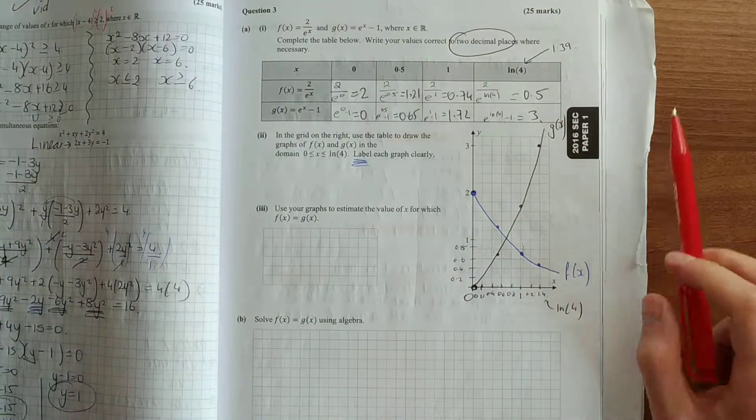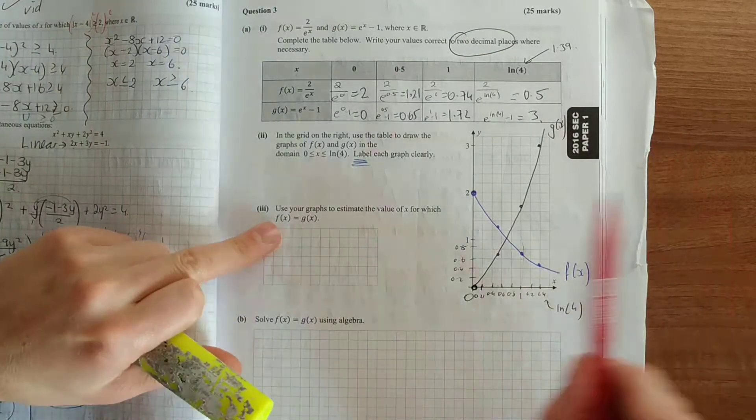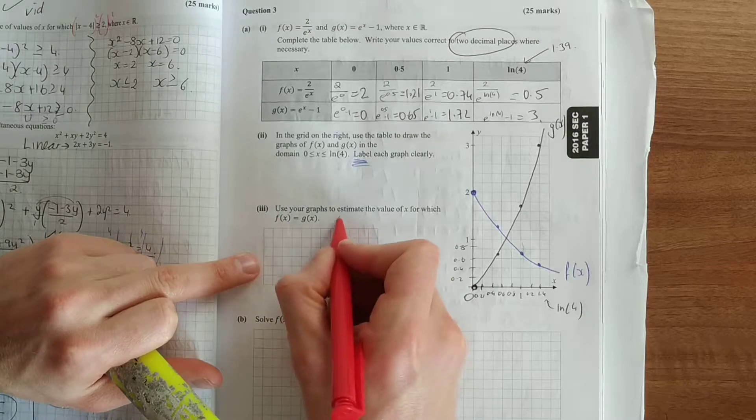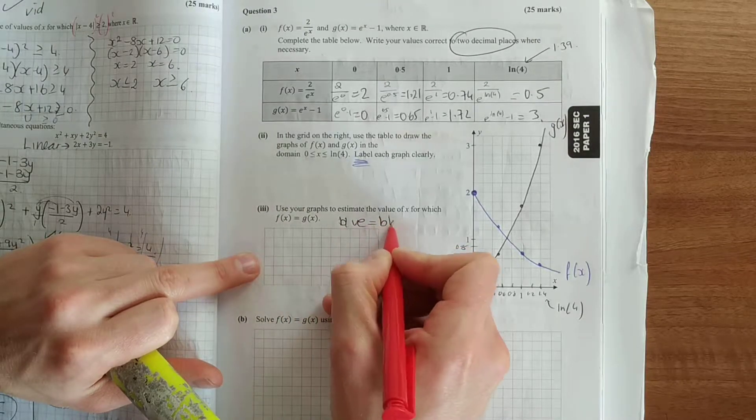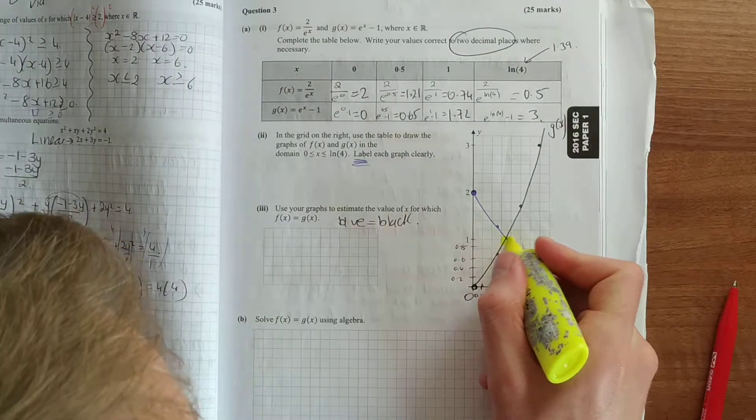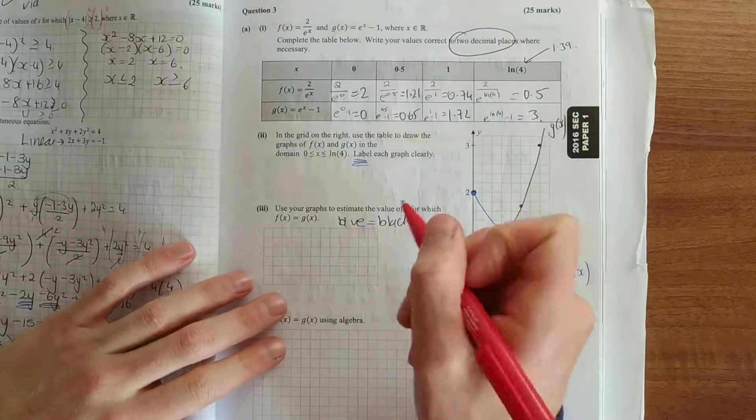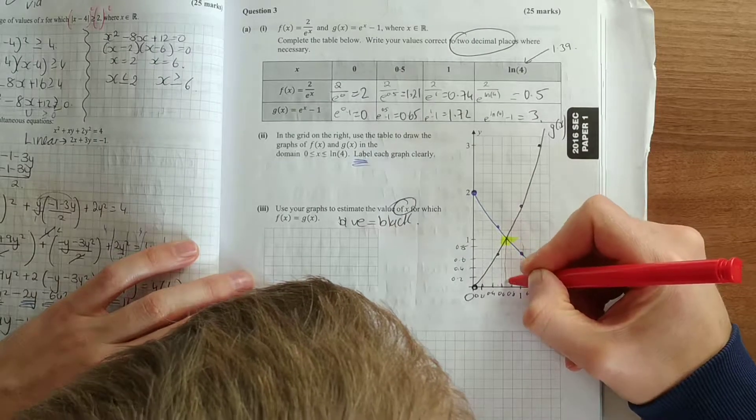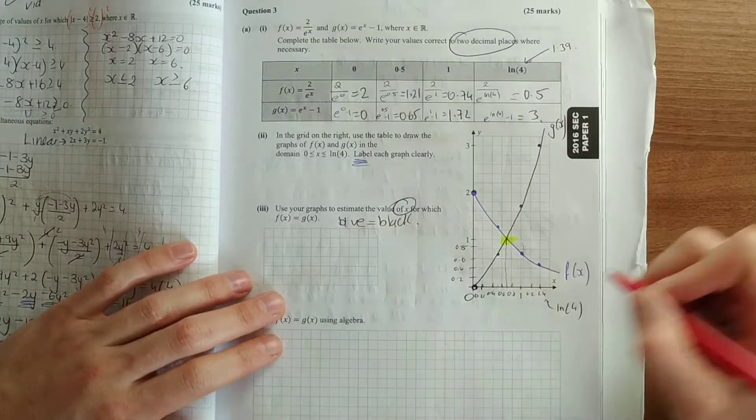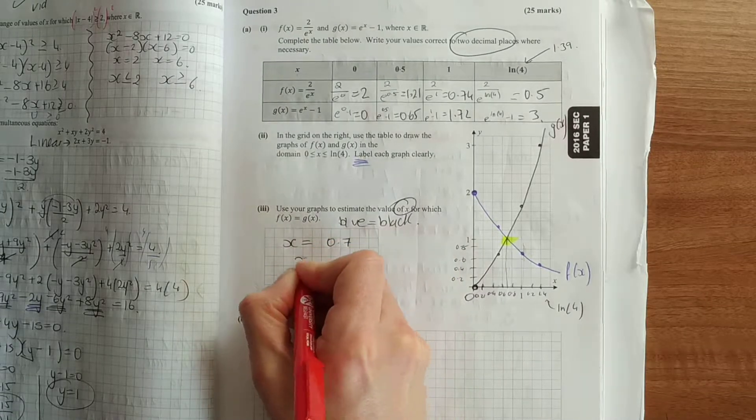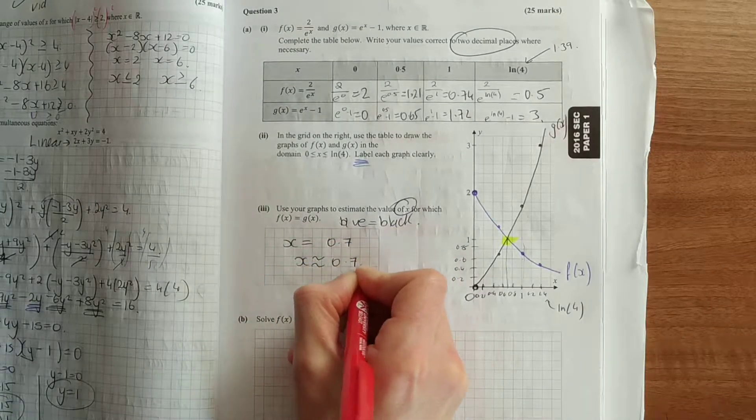So as you can see here, use your graph to estimate the value for which f of x is equal to g of x. That's asking you, where is that blue graph equal to the black graph? So where do they intersect? As you can see, they intersect there. And estimate the value of x, I haven't asked you for the point. So estimate that value of x, say, halfway between 0.6 and 0.8. x is equal to 0.7, or x approximately equal to 0.7.